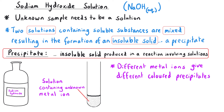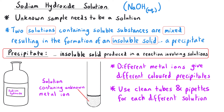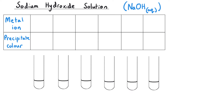We can use sodium hydroxide solution to distinguish between samples containing different metal ions, because different metal ions will produce different coloured precipitates after reacting with the sodium hydroxide. It's really important that if we're testing multiple unknown solutions, we use clean test tubes for each solution and clean pipettes for each different chemical in order to prevent contamination, as this might give us misleading results or incorrect coloured precipitates leading to the wrong conclusion. There are six different metal ions you need to be able to distinguish between in the sodium hydroxide solution test.